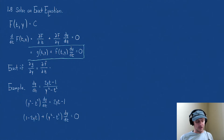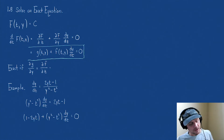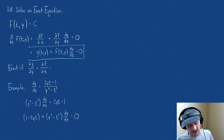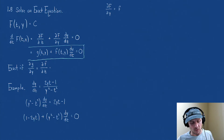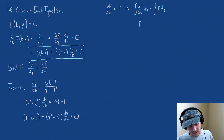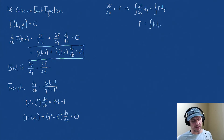Now this is where it gets interesting. We know that the function f came from taking the derivative with respect to y. So if I take the derivative of capital F with respect to y, that gives me f. So to undo this and figure out what capital F is, I would take the integral of f with respect to y, and that gives me capital F.